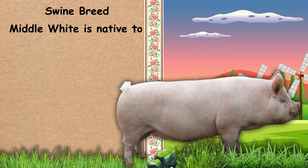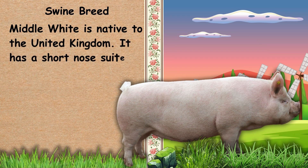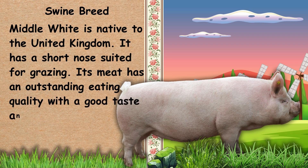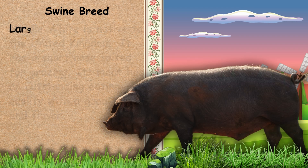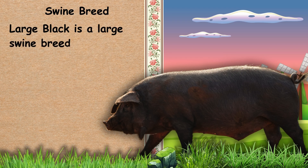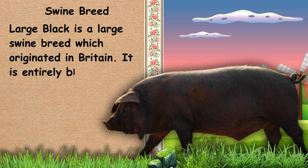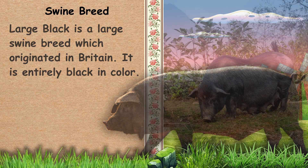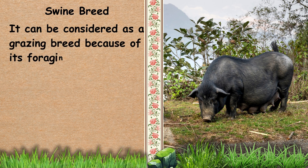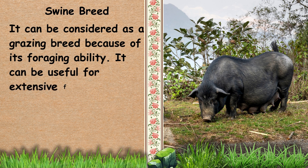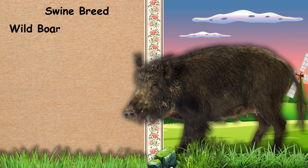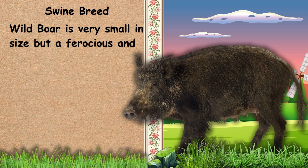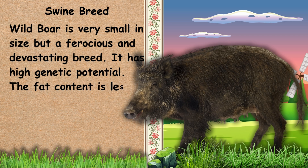Next, we have Middle White. Middle White is native to the United Kingdom. It has a short nose suited for grazing, and its meat has an outstanding eating quality with good taste and flavor. Next, we have Large Black. Large Black is a large swine breed which originated in Britain. It is entirely black in color and can be considered a grazing breed because of its foraging ability, useful for extensive farming. Next, we have Wild Boar. Wild Boar is very small in size but a ferocious and devastating breed. It has high genetic potential, and its fat content is less compared to other breeds.